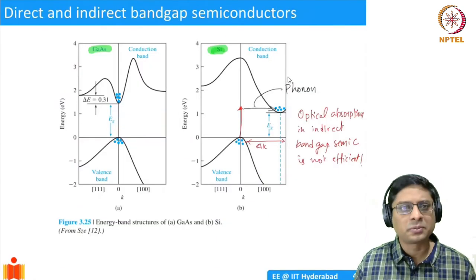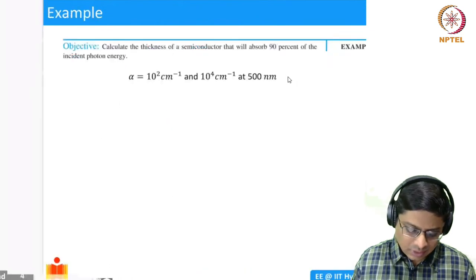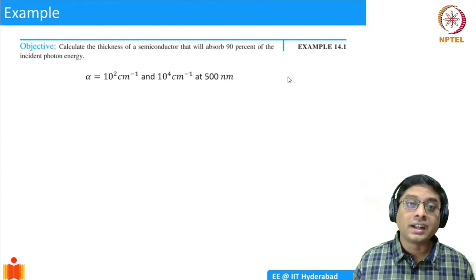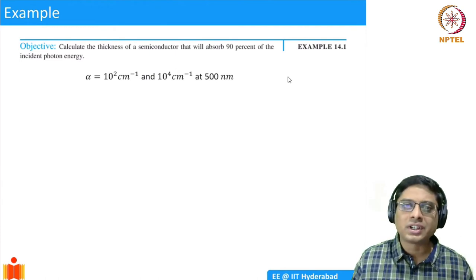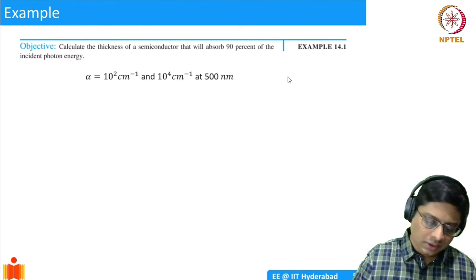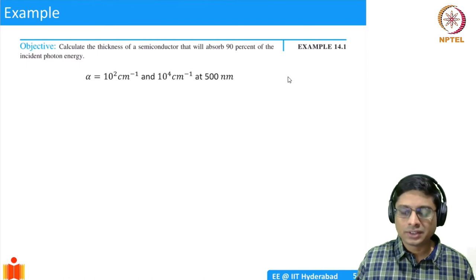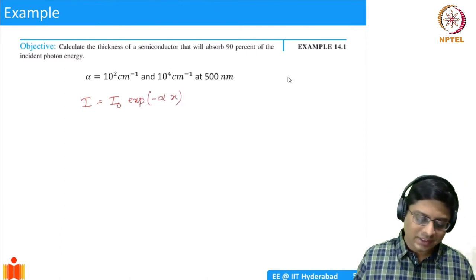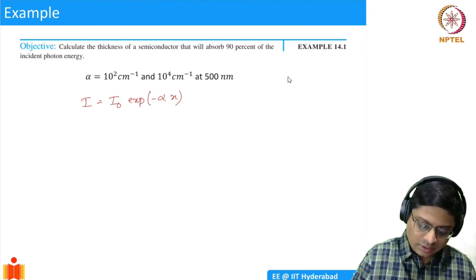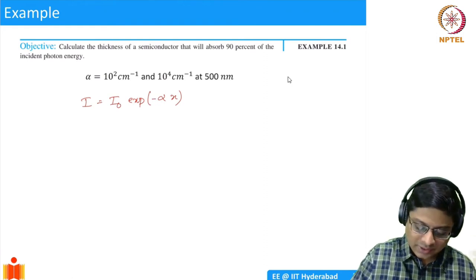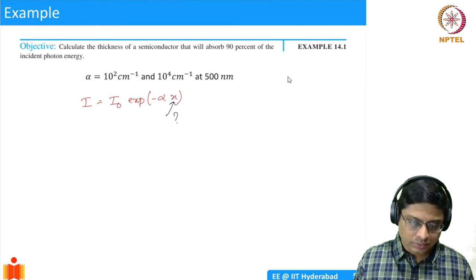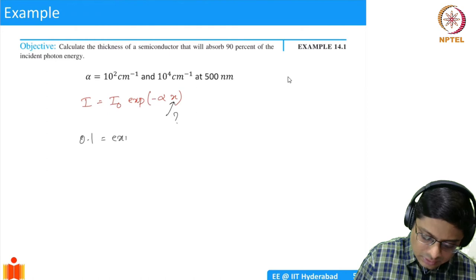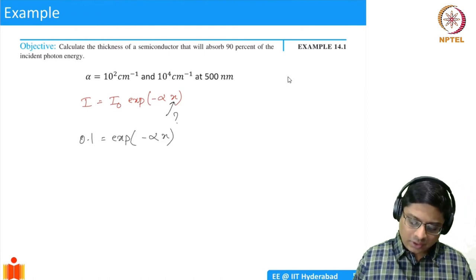Let's solve a couple of problems to build confidence. The first example asks: calculate the thickness of a semiconductor that will absorb 90% of the incident photon energy. Using Beer-Lambert law: I = I₀ · e^(−αx). If the initial intensity is 1, we need 10% remaining, so 0.1 = e^(−αx).